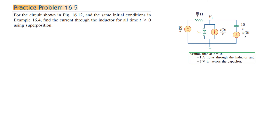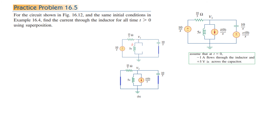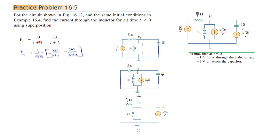Now for the practice problem, which uses the same circuit (figure 16.12) and the same initial conditions. Here we find the current through the inductor instead of the voltage across the capacitor. Using superposition, we again apply one source at a time. From the first source circuit, we already found v1, and from it we derive i1 = v1/(5s).